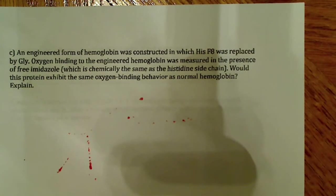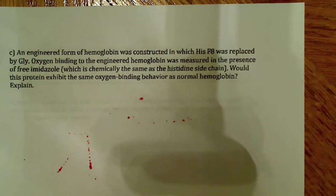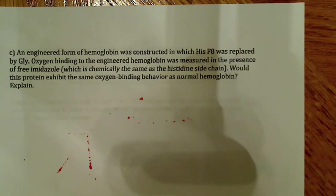What do we know about normal hemoglobin? Normal hemoglobin exhibits cooperative binding. That is, it's difficult to put the first oxygen on, but once that first oxygen binds, it induces a conformational change which allows the next oxygen to bind easier. Then that induces a conformational change which makes the third oxygen even easier to bind.